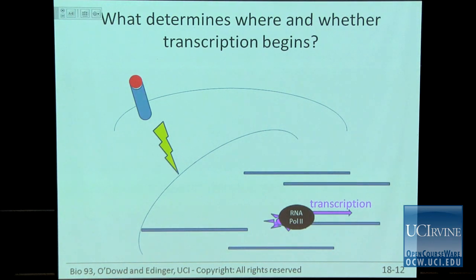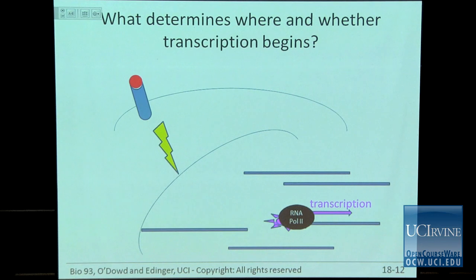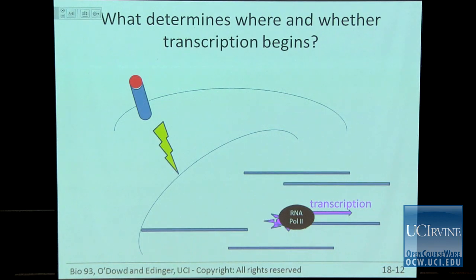Student question: what happens to the transcription factor underneath RNA polymerase II? It stays there — it's still bound — and eventually it will fall off.